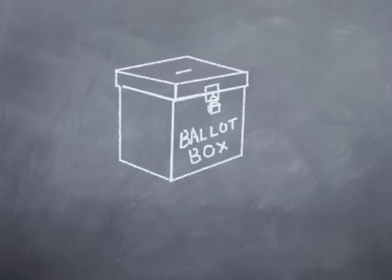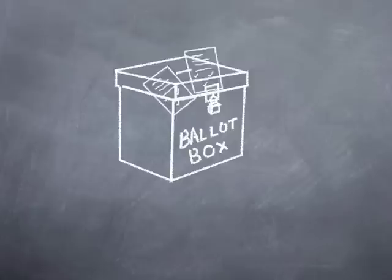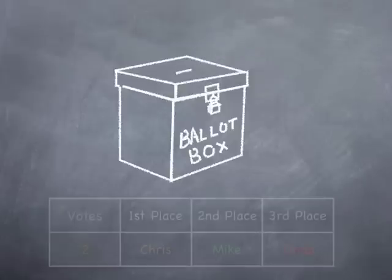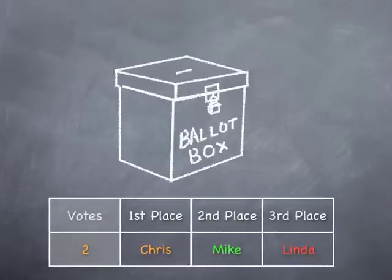But wait, there's more. Prior to the election being certified, they found a ballot box that had two ballots stuck to the side of the box. They needed to count those two ballots and they did. Those two ballots had Chris in first, Mike in second, and Linda in third.